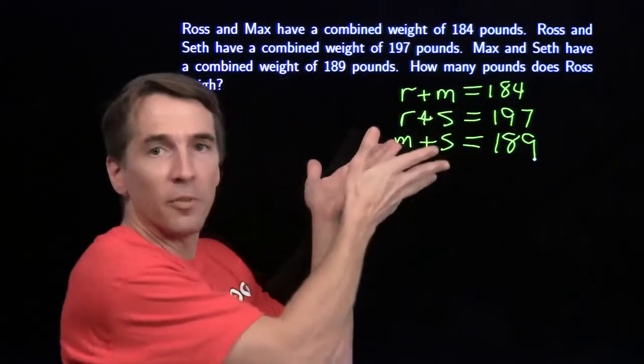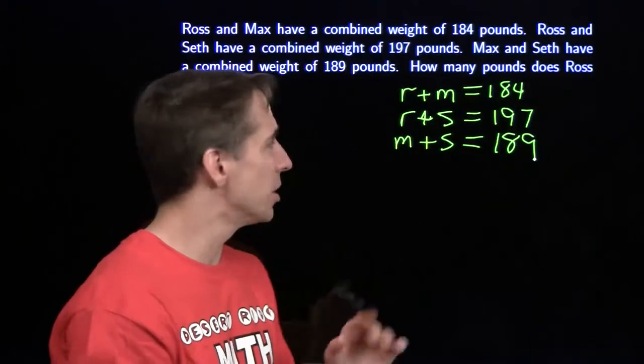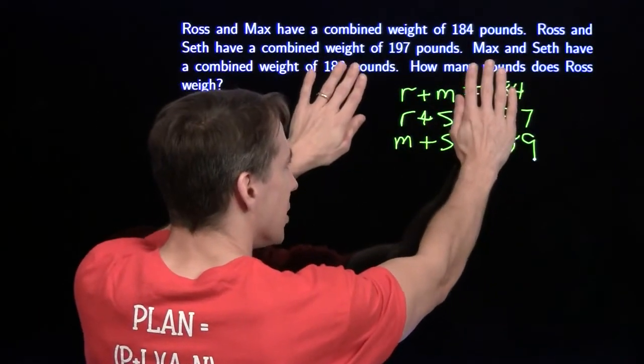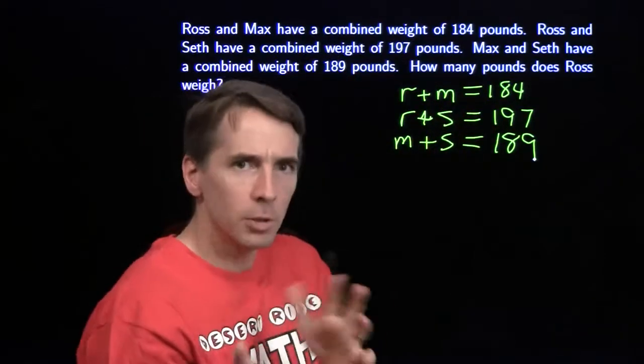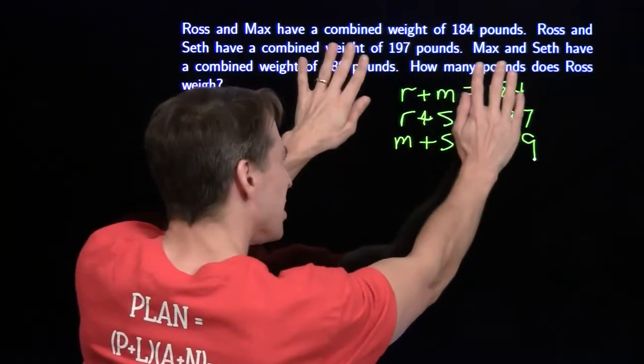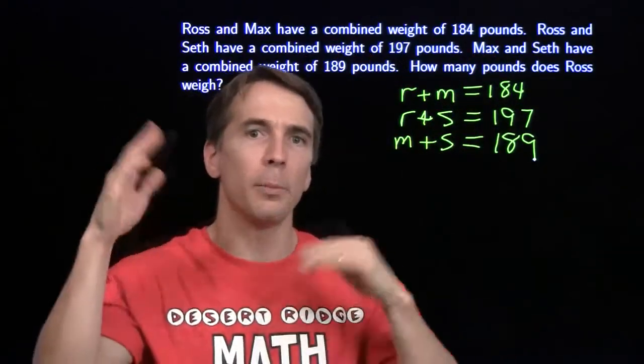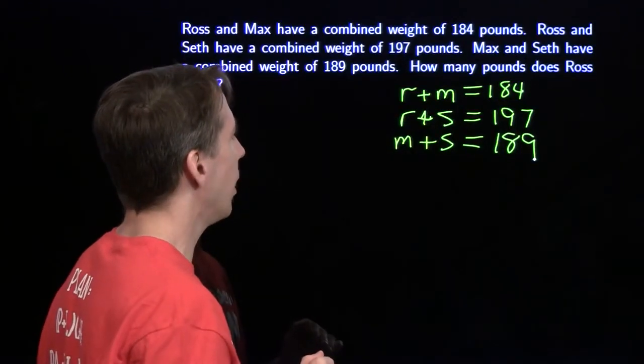Now we have a nice system of equations here. We can tackle this with substitution or elimination, but I see something exciting over here on the left-hand side. We've got some beautiful symmetry. We have every possible combination of two of Ross, Max, and Seth. When I see symmetry like that, I like to look for a way to combine all three equations.